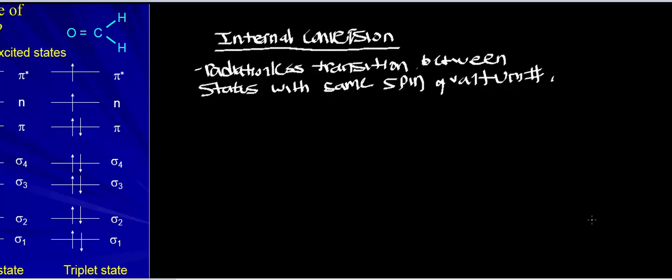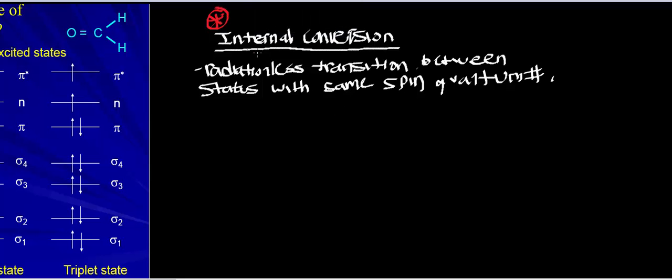Welcome back. In this video, we're going to talk about a phenomenon in quantum mechanics known as internal conversion. Before we get into the mechanics of how it works, I want to first define what it is. It's a radiationless transition between states where we have the same spin quantum number.